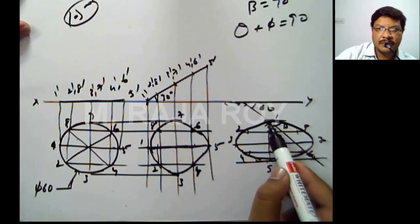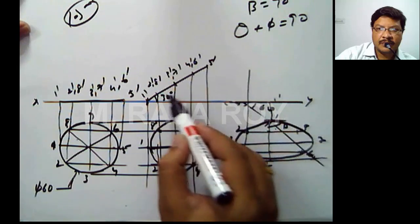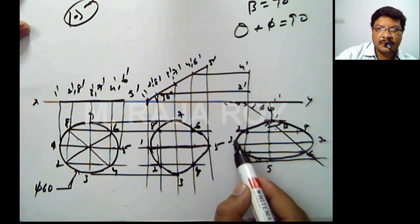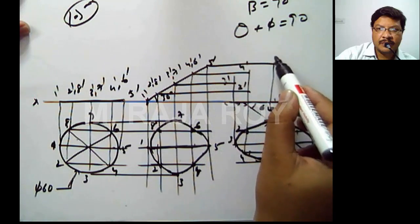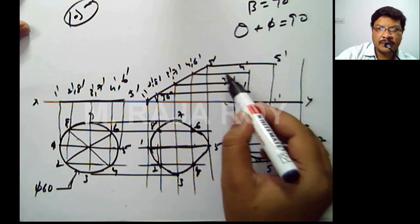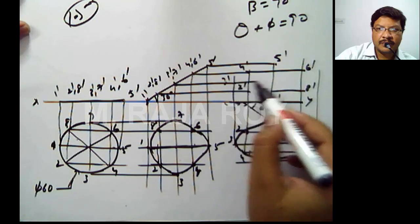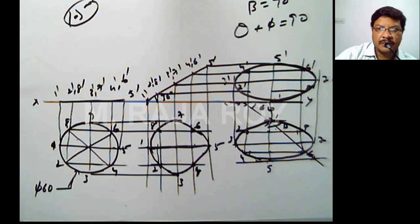Now draw the projections to the front view. Projector from 1 meets the locus line from 1', giving point 1'. Projectors from 2 and 4 give 2' and 4' somewhere here. Projector from 3 gives 3'. Projector from 5 gives 5'. Projectors from 6 and 8 give 6' and 8'. Projector from 7 gives 7'. Joining all these points with a smooth curve gives an ellipse — this is the front view of the circle, which appears as an ellipse when inclined at 30 degrees to HP and 60 degrees to VP.